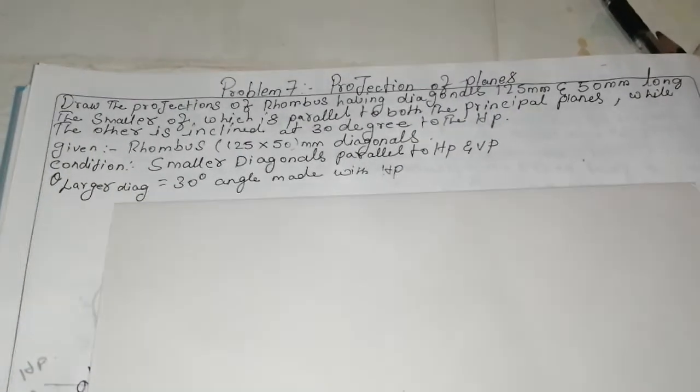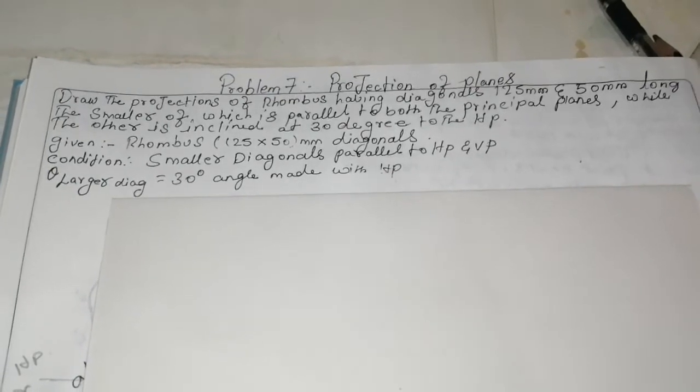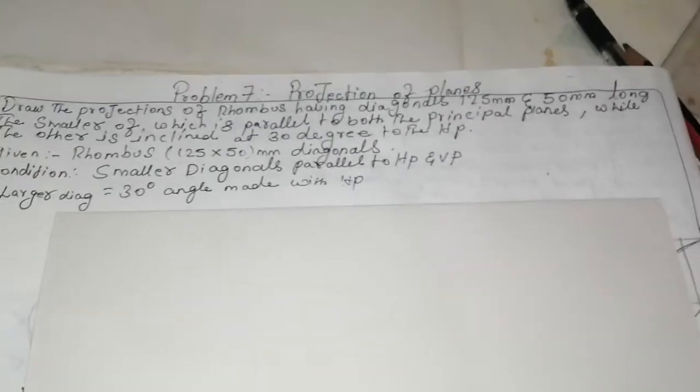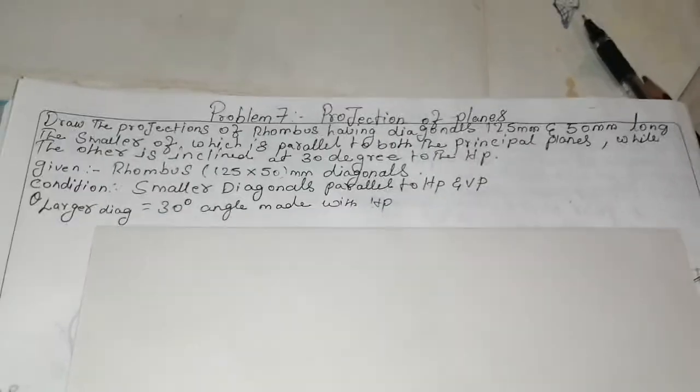Welcome to my channel, MR Engineering Drawing. This is for mechanical engineering students. The projection of a plane. Problem number seven: draw a projection of a rhombus having diagonals 125 mm and 50 mm long.